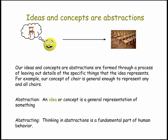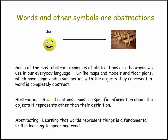It only includes the essential information that a chair is something we can sit on. This idea of thinking in abstractions is really a fundamental part of human behavior — it's really the way we perceive and think about the world. Another nice example are the words we use, and words are some of the most abstract examples of abstractions. They're abstract in the sense that they have no similarity with the objects they represent. The word for chair is just a string of letters — it has no shape, no four legs, and so on. So we've abstracted away all the details and we're left with just the fundamental idea that a chair is something you can sit on. Learning that words represent things is a fundamental skill that we acquire as we learn our language.